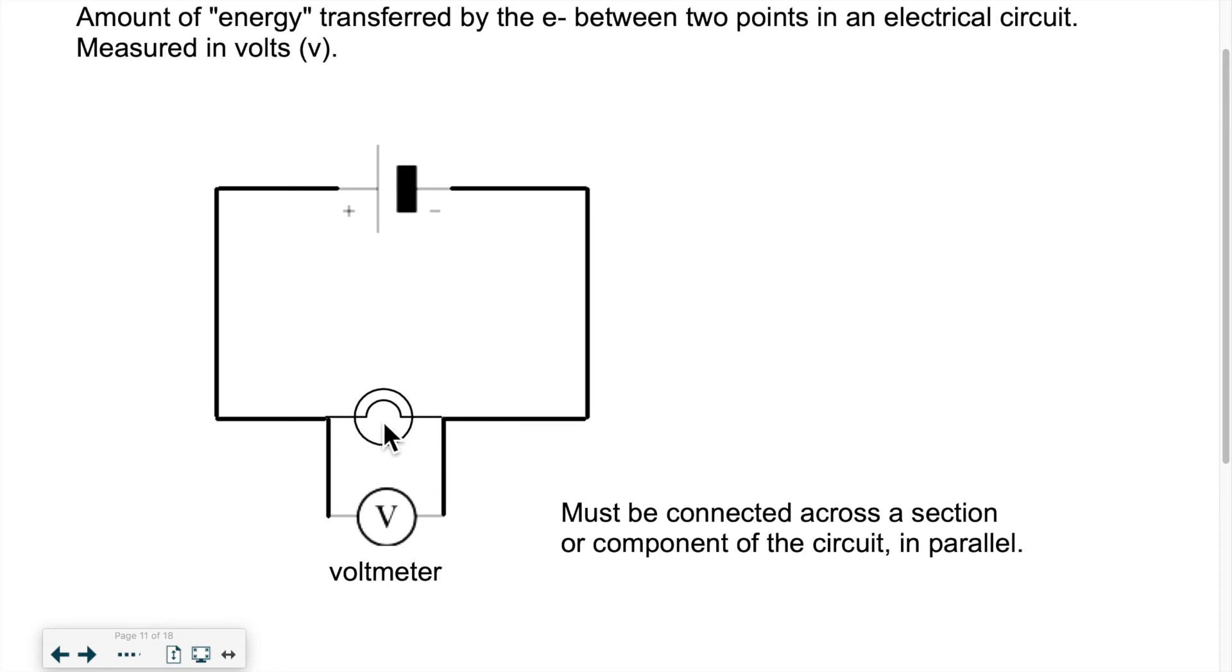So we know exactly how much energy they spent in the light bulb. Because they spend that energy, the light bulb gets lit. The voltmeter measures that. The difference, that's why it's called a potential difference, it's the difference between the before and after in terms of energy.